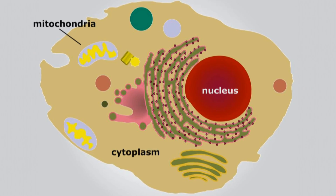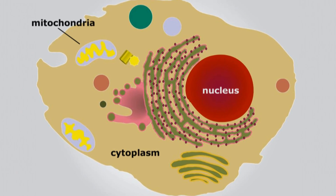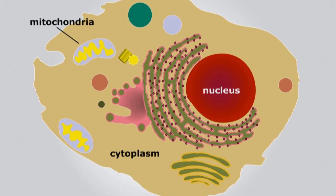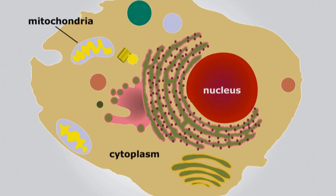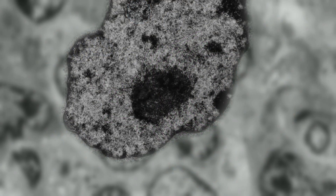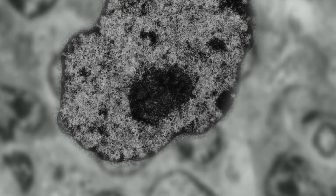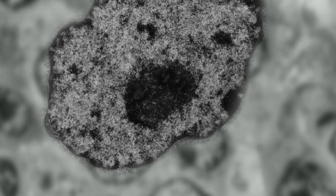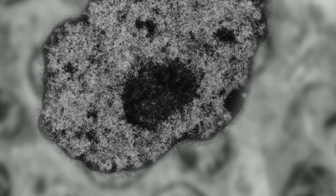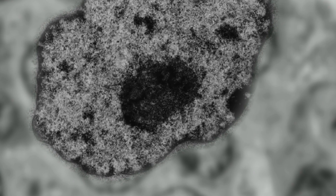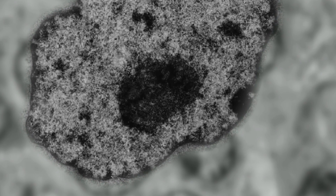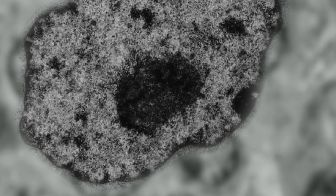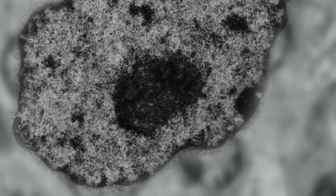Like tiny factories, each cell has key parts to help it run. The nucleus is the main organizing center of the cell. It contains all of the genes that regulate the cell. So it has the basic blueprint of how that cell is supposed to function.